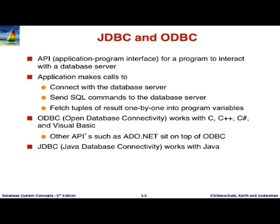Now, a very brief overview of JDBC. ODBC is the father of JDBC in some sense. The goal of all of these systems is to provide an API which programmers can use to connect with the database server, send SQL queries, and get results back. One other thing is to get metadata — like what are the relations in this database, their attributes, primary keys, foreign keys. So the JDBC API supports all of these: connecting, running queries, getting results back, and getting metadata information.